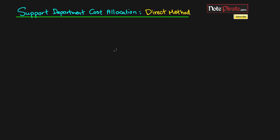Hey guys, welcome back. In the last video I gave a general overview of what support departments are. In this video I wanted to show how to actually allocate cost from support departments to revenue producing departments. We can do this by using three different methods: the direct method, which we're going over in this video, the step down method, and the reciprocal method.